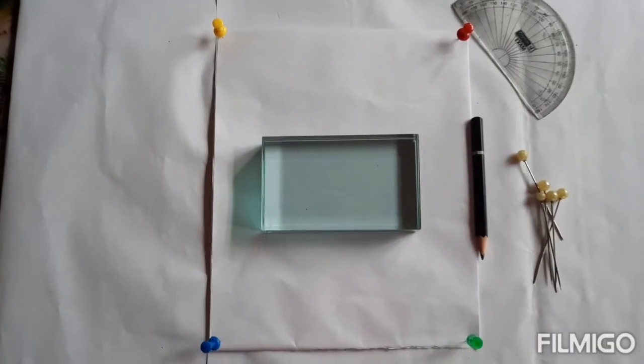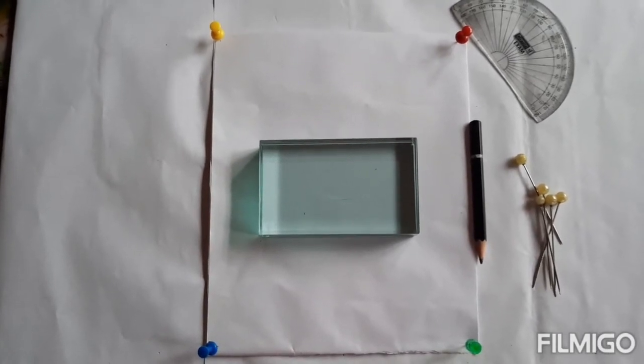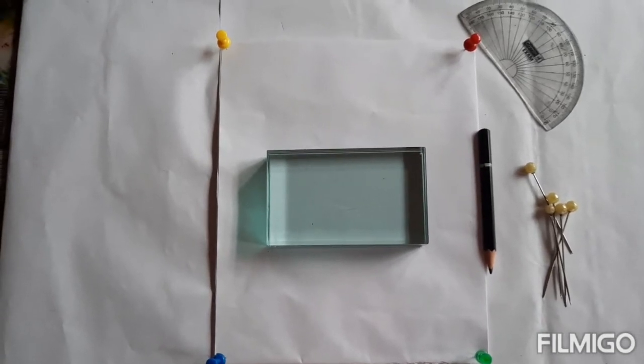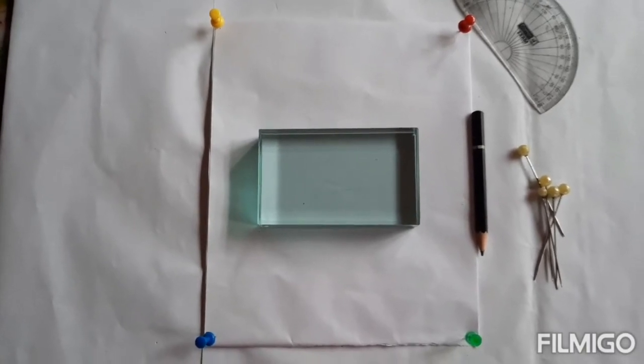Here we have placed a glass block on a sheet of white paper. We need a pencil, a few pins, and one protractor is also required to measure the angle after the experiment is done.